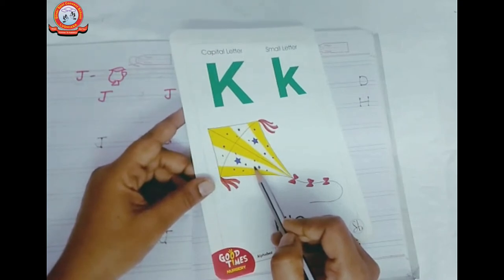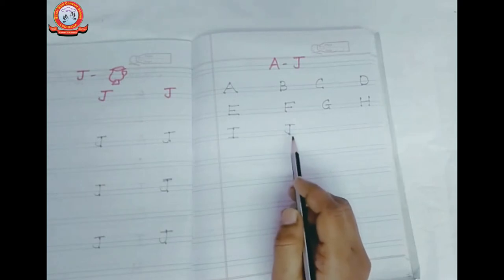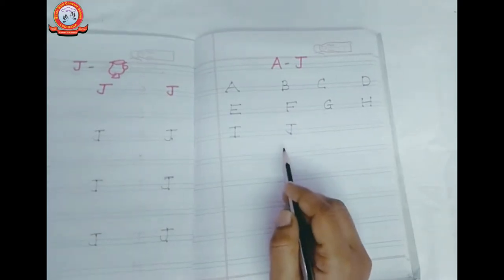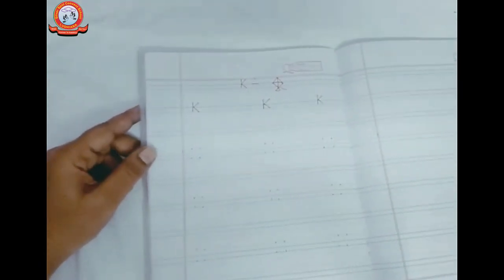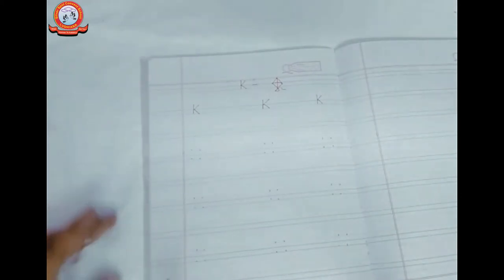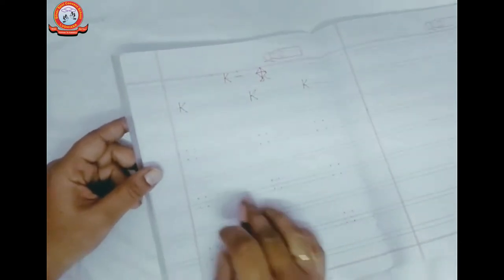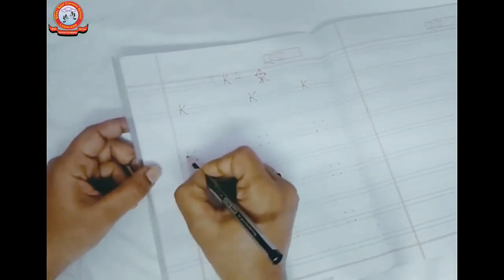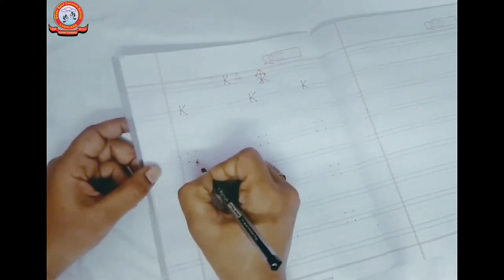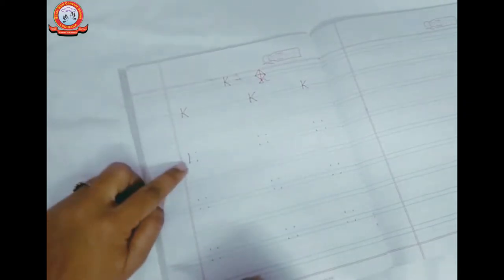So how to write? This is letter K. What is this? This is letter K. How to write in the notebook? This is the first time, what we will do. I am giving four dots here. I am giving you four dots here. What do you do?